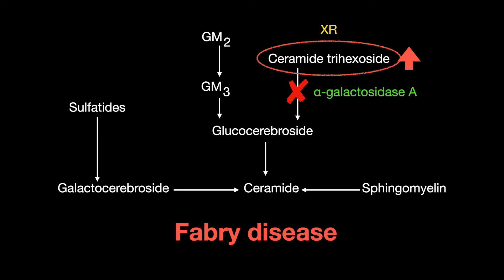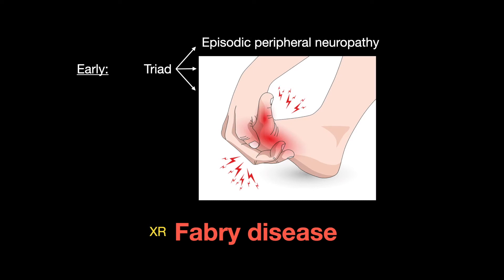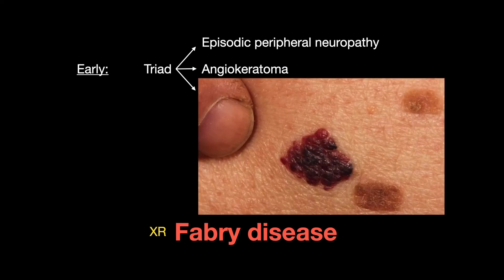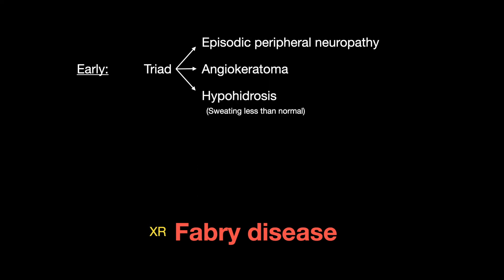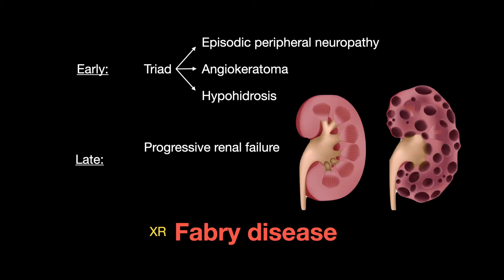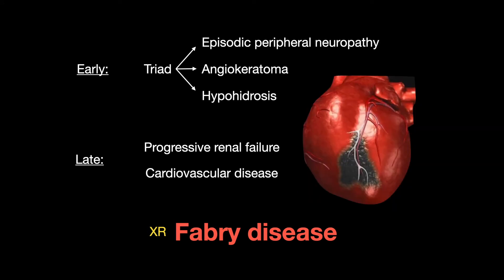Fabry disease is an X-linked recessive disorder. In the early stage, it presents with a triad of symptoms: episodic peripheral neuropathy, angiokeratoma, and hypohidrosis, which is sweating less than usual. The later stages of Fabry disease cause progressive renal failure and cardiovascular disease.